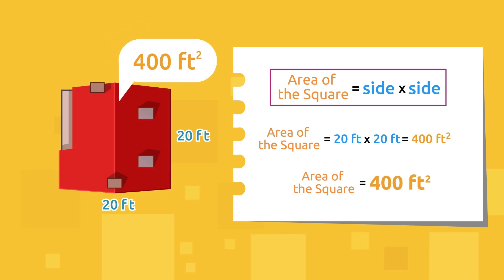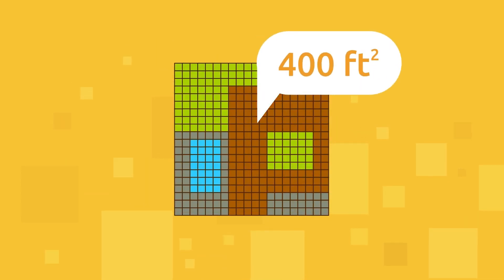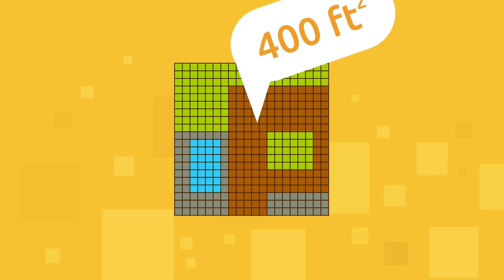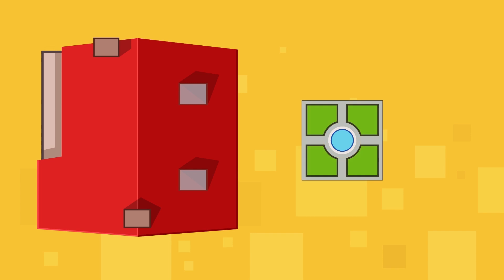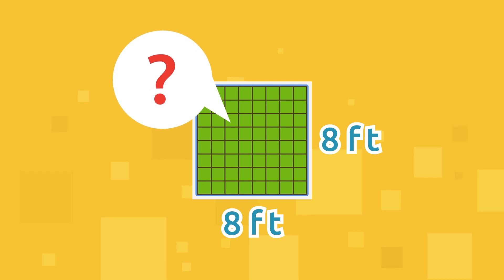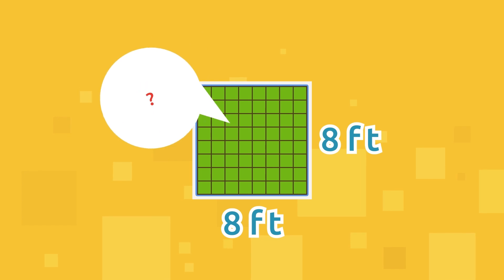Patricia is going to build a 400 square foot house — it'll be huge! If we were patient enough to count each square, we would see that there are exactly 400 squares, each measuring one square foot. Let's help Patricia a bit more. She wants to build a square garden next to her house. If each side of the square measures eight feet, how big would the garden be?